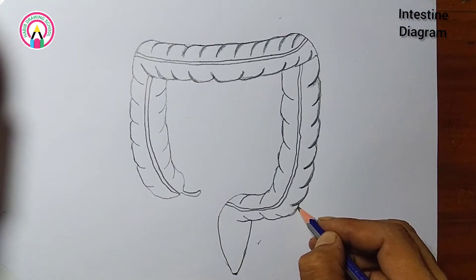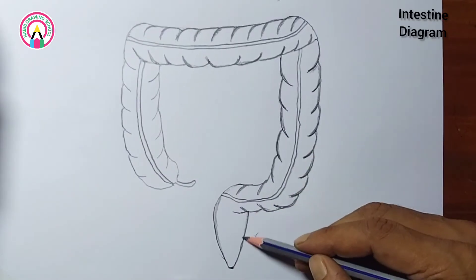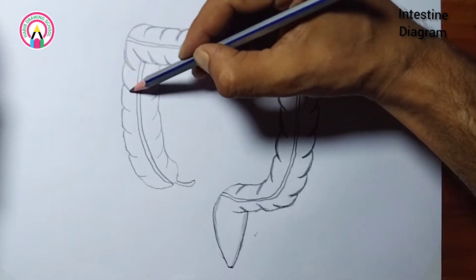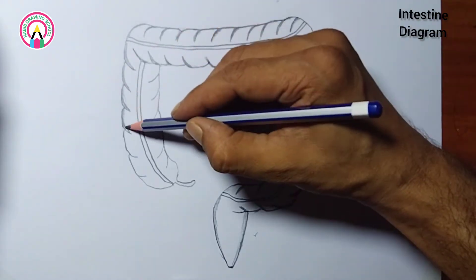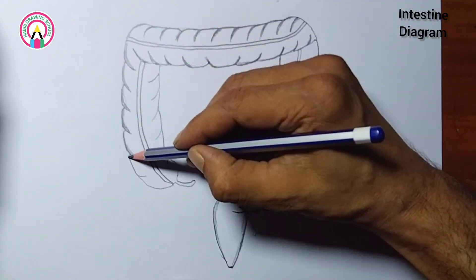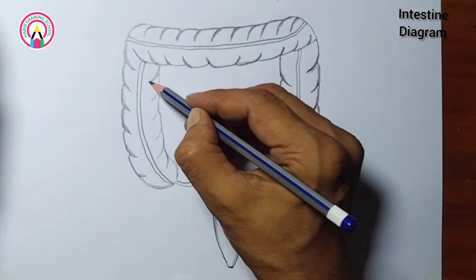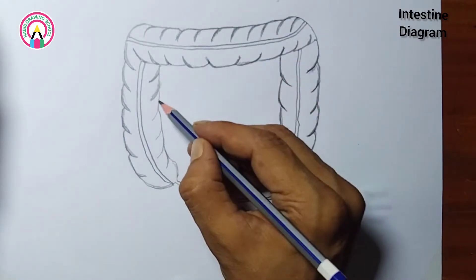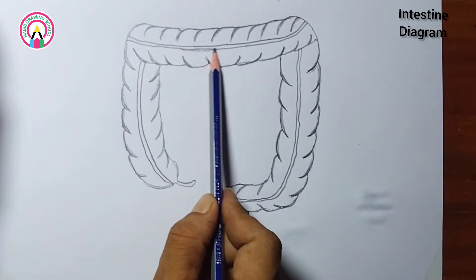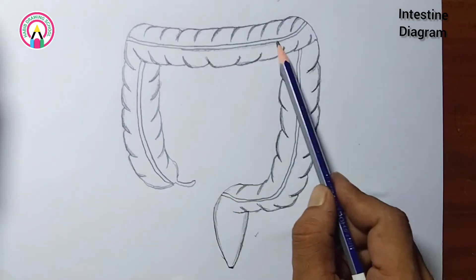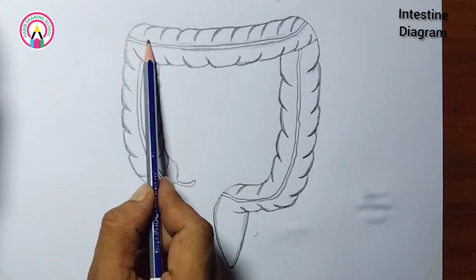Three: bacterial flora. The large intestine contains a vast number of microorganisms which help in breaking down waste, producing certain vitamins like vitamin K, and protecting against harmful bacteria.